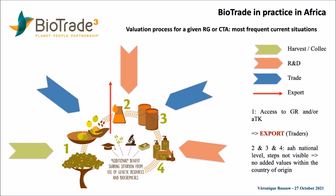This step is aimed to reach markets — national markets, regional markets, or international markets. To reach those markets, there is a notion of scale, and what we call the primary transformators usually produce at industrial scale the derivative, the ingredient. This is represented with the drums close to the number three.